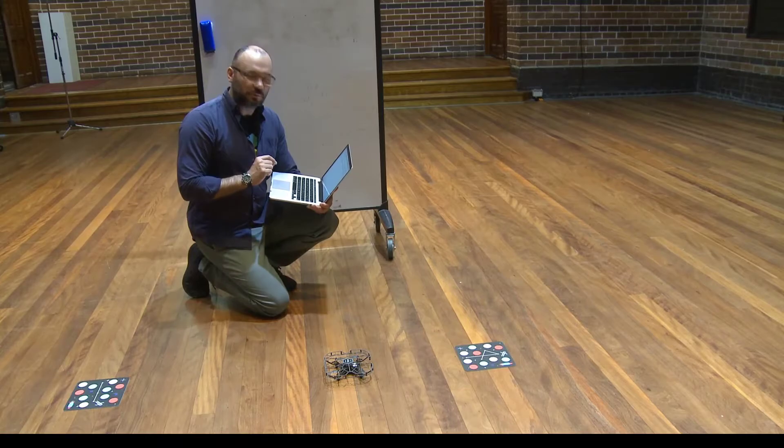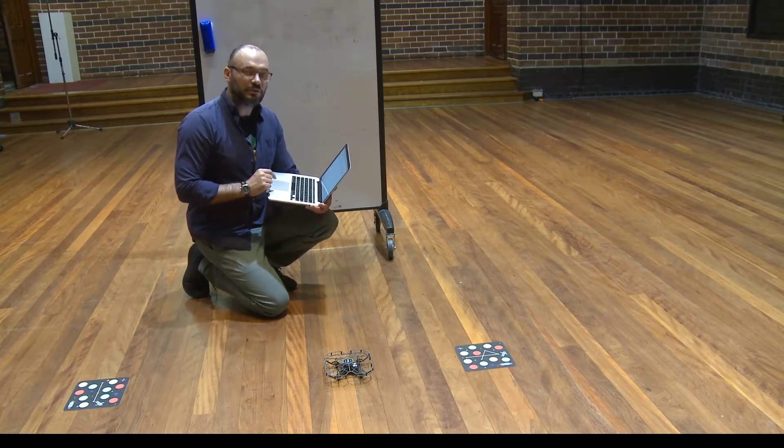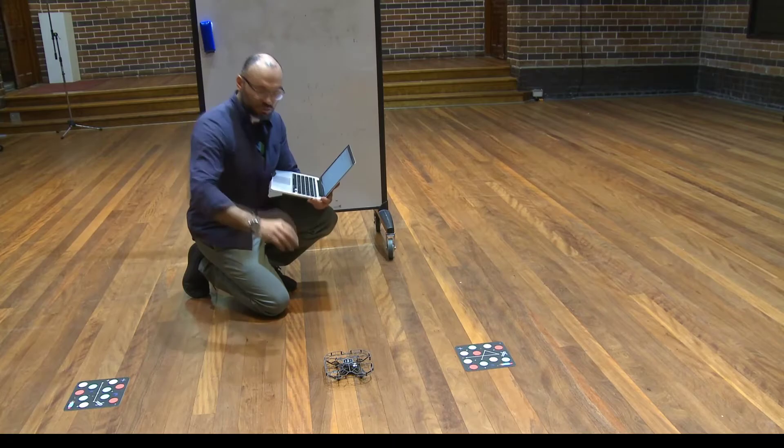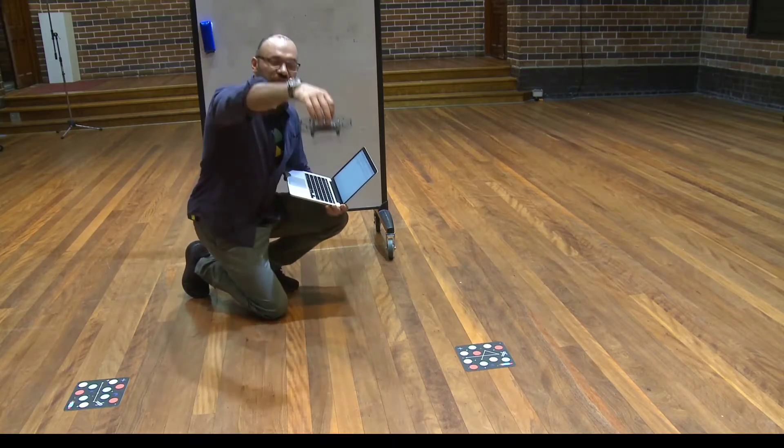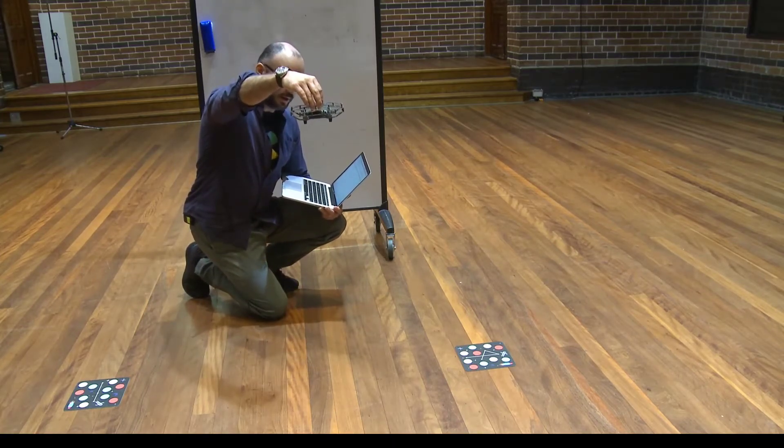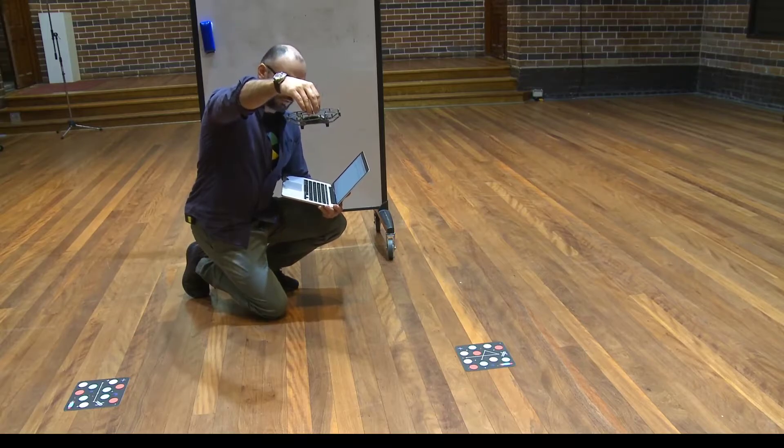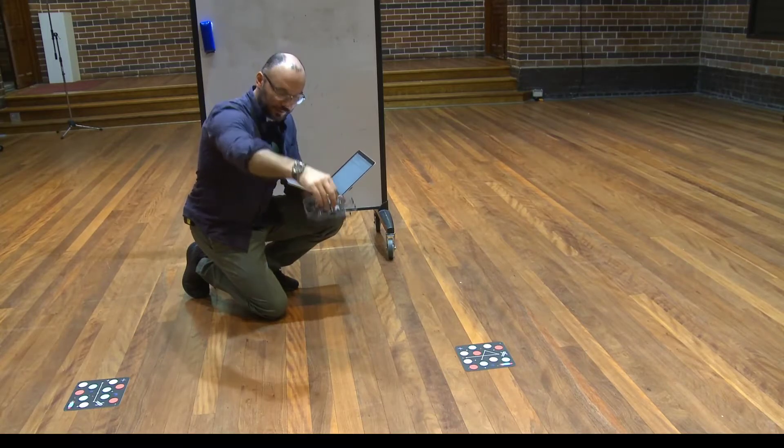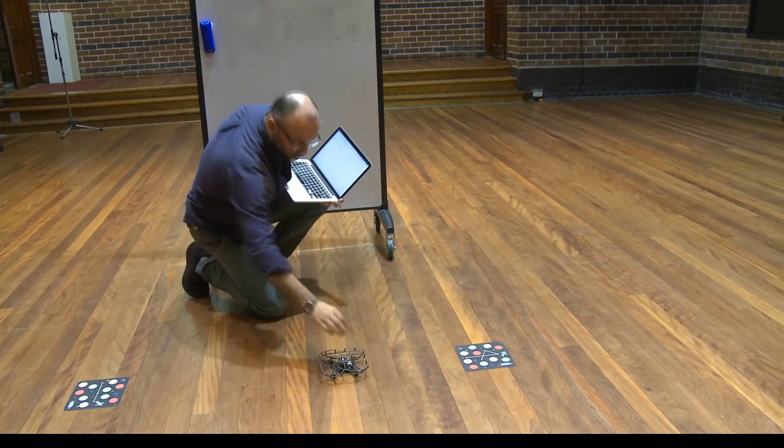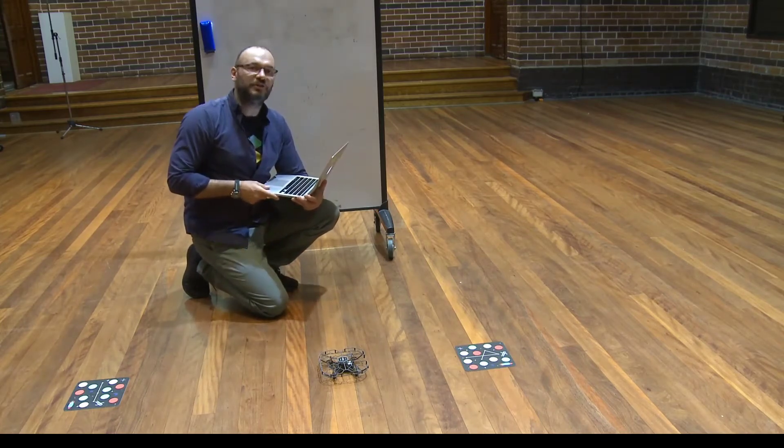It sees the next mission pad and lands, but there is a little problem. As you notice, it doesn't actually land on the mission pad. It's because the drone manages to see the new mission pad a little bit ahead of itself. And therefore it lands a little bit in front of the mission pad. Let's see how we can adjust that code.